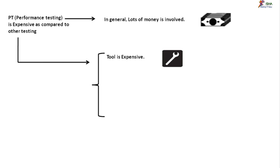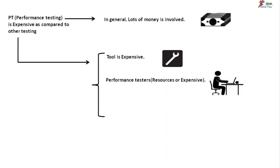One more thing: when you compare performance testing with other testings like automation and manual, performance testing is generally more expensive. You're using tools like JMeter or BlazeMeter — some tools are expensive, though JMeter is not. Resources in performance testing are more expensive compared to other types. Also, the environment requires a full-scale infrastructure. A manual or automation tester can work with a partial instance, but a performance tester ideally needs a full-scale or at least half-scale infrastructure.